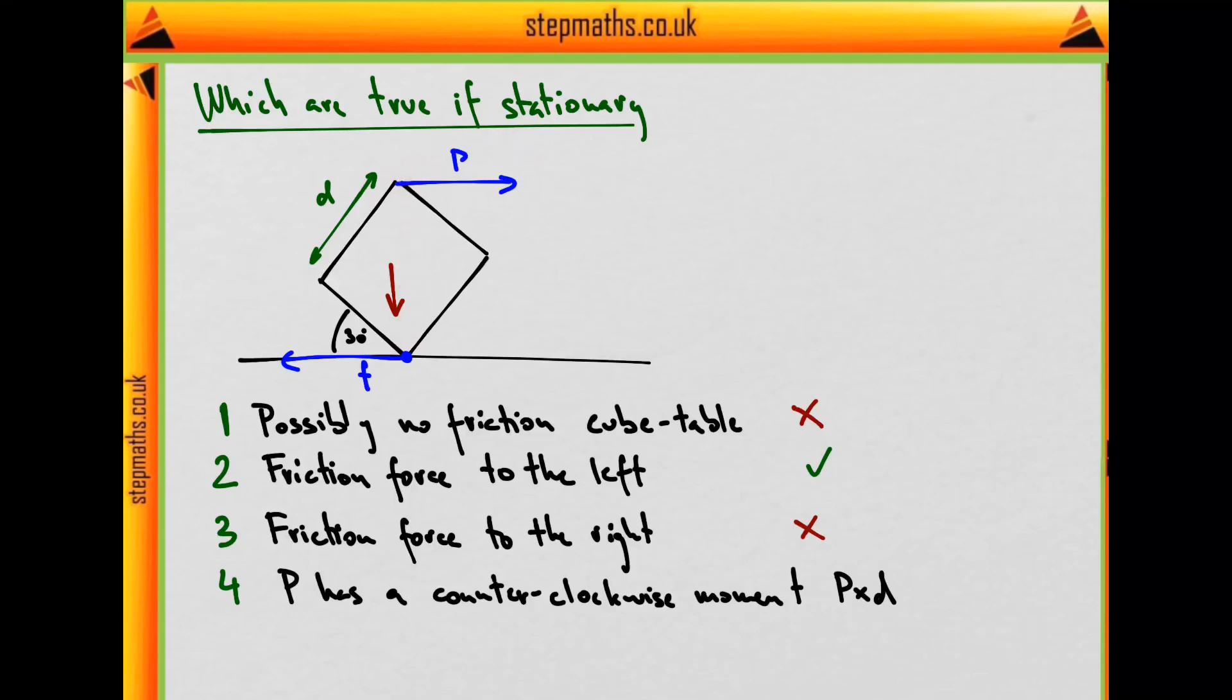So in this case, it would either point out of the page or into the page. So the only part which is actually correct is that P has a moment. Both the direction and the magnitude are wrong. In any case, four is incorrect. Two was the only correct statement, which makes B the right option to pick.